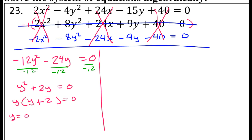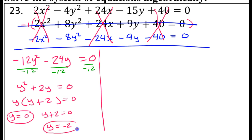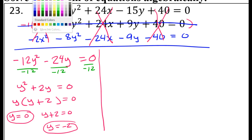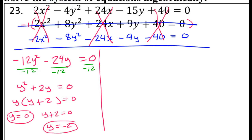Taking out y leaves y(y + 2). Using the zero product property and setting both factors equal to 0: y equals 0 is one solution, and subtracting 2 from both sides gives y equals negative 2. Now understand — these are not final answers in any way. I need an x and a y; these are only y values.